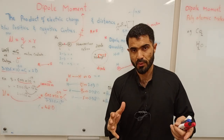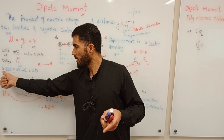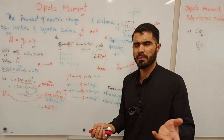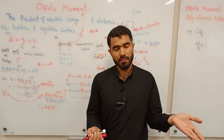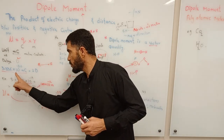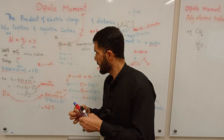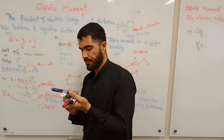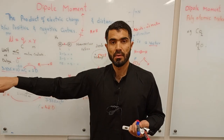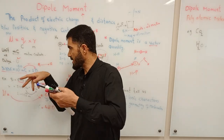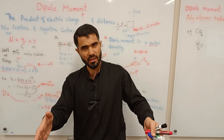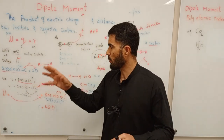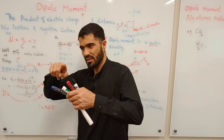One Debye is equal to 3.336 × 10⁻³⁰ meter·coulomb. This conversion factor is very useful. If you want to convert meter·coulomb into Debye, you divide by 3.336 × 10⁻³⁰. If you want to convert Debye into meter·coulomb, you multiply by 3.336 × 10⁻³⁰. So either divide or multiply depending on the direction of conversion.